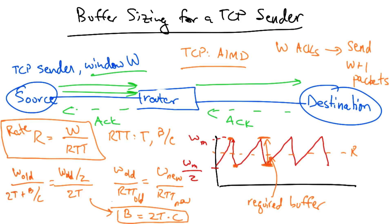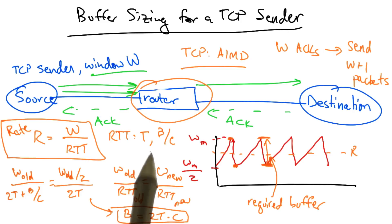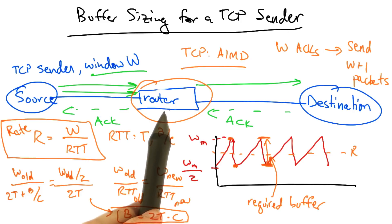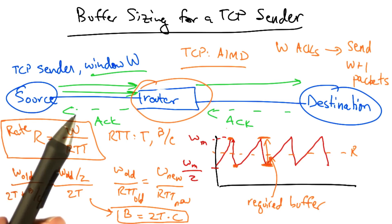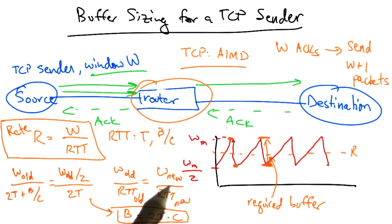Now the rule of thumb makes sense for a single flow, but a router in a typical backbone network has more than 20,000 flows. And it turns out that this rule of thumb only really holds if all of those 20,000 flows are perfectly synchronized. If the flows are desynchronized, then it turns out that this router can get away with much less buffering.